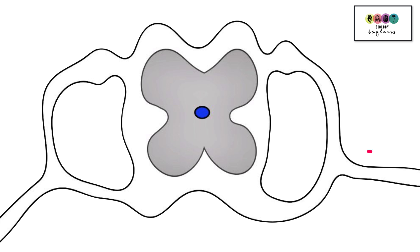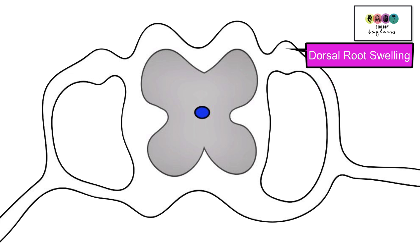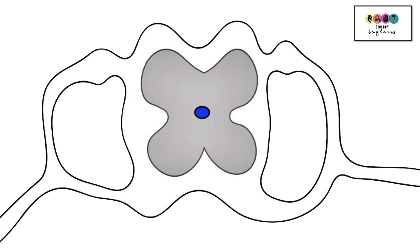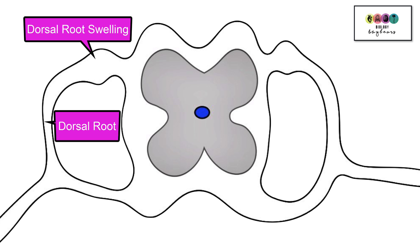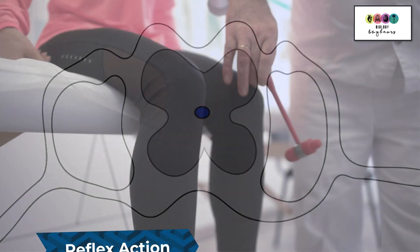Nervous impulses enter the spinal cord through the dorsal root. The dorsal area is towards the back of the spinal cord, and you'll recognize it because of the dorsal root swelling. The impulses are carried by sensory neurons. Nervous impulses are carried out of the spinal cord by motor neurons, and they leave through the ventral root at the front of the spinal cord. It's important to recognize that these same labels are on both sides of the spinal cord diagram — the dorsal root, the dorsal root swelling, and the ventral root — so be careful if given a diagram where it's coming in from the other side.